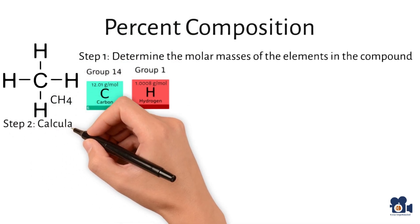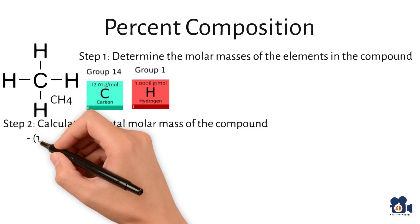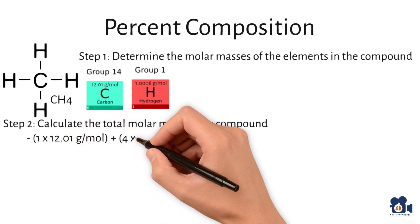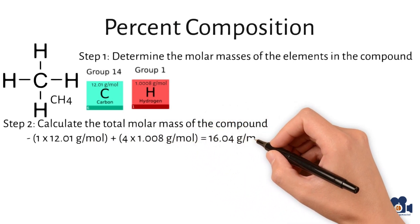Step 2, calculate the total molar mass of the compound. The total molar mass of methane, CH4, is 1 times 12.01 grams per mole plus 4 times 1.008 grams per mole to equal 16.04 grams per mole.